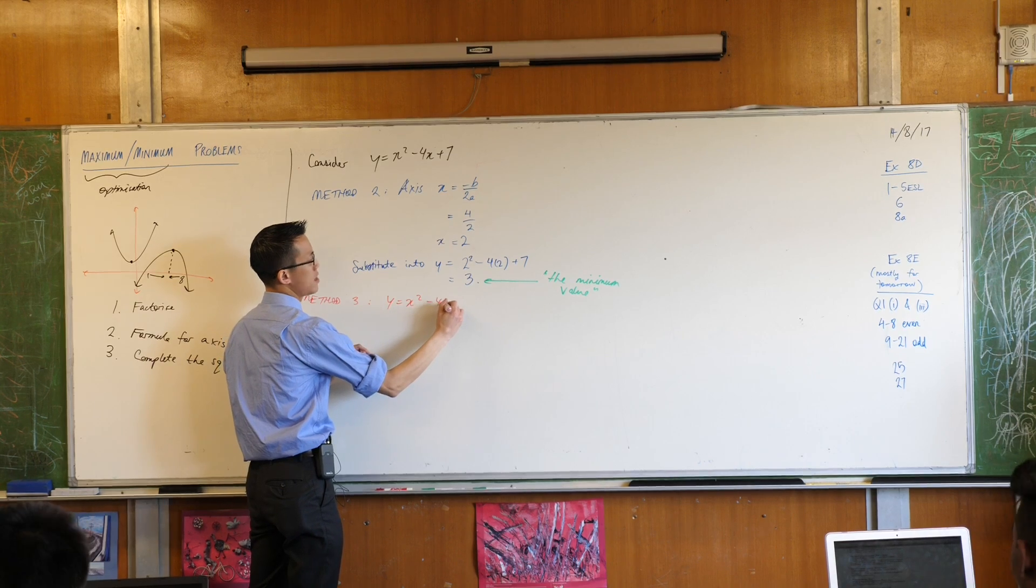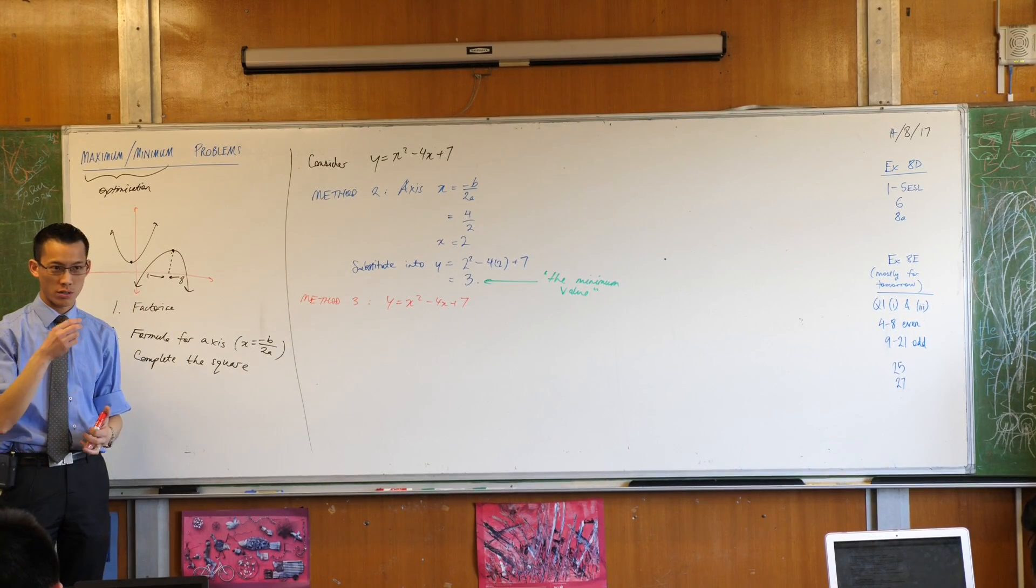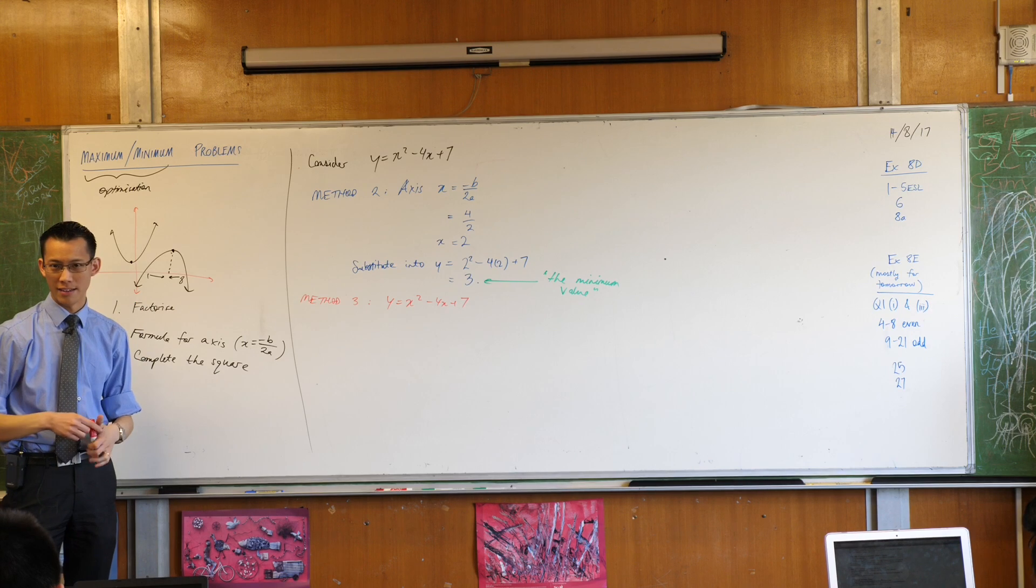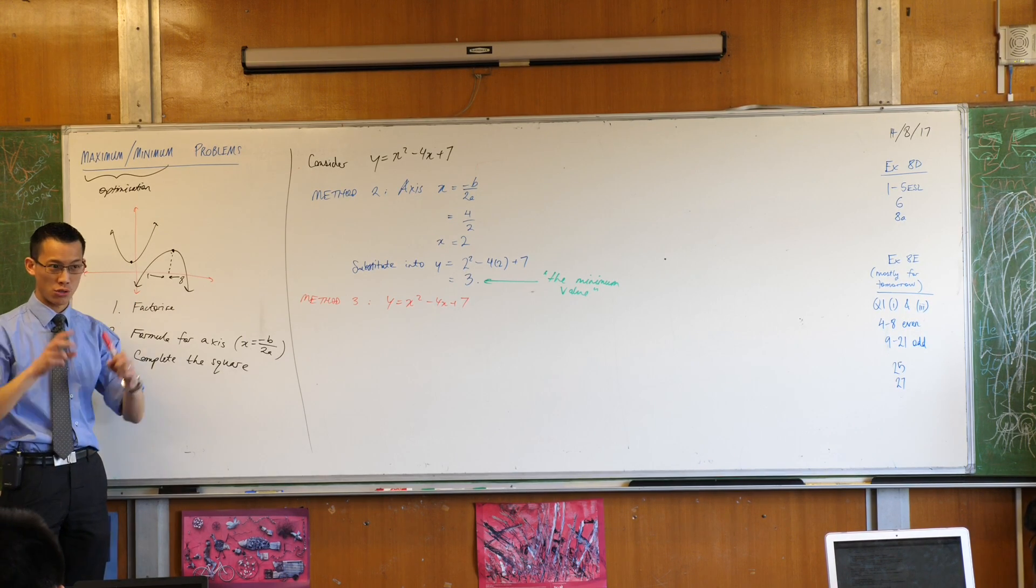Okay, now we know that completing the square mainly focuses on one number in this line. Which number is it? Which number is the most important number to completing the square?